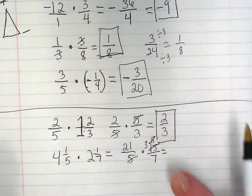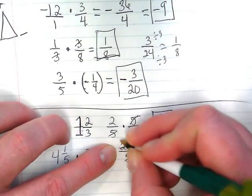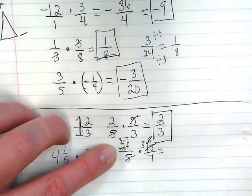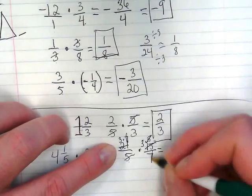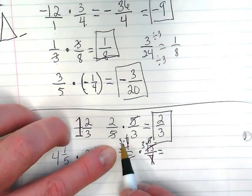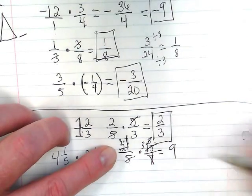And what math fact do we know about 7 and 21? 21 is really the same as saying 3 times 7, isn't it? So I can cancel, cancel. And now there's nothing underneath, but on top I have a 3 times 3. This equals 9.